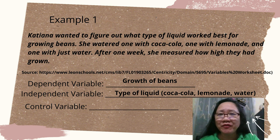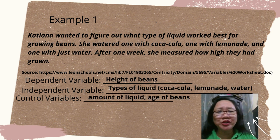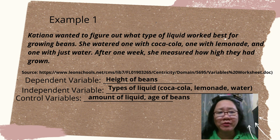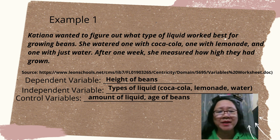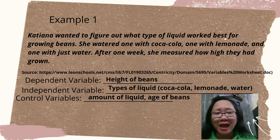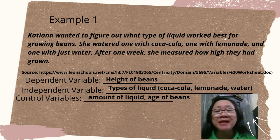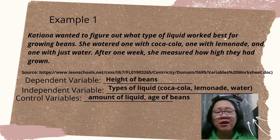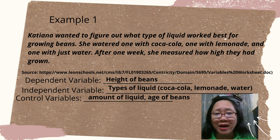Now, can you identify the control variable? Control variables are variables that are constant and do not change in the study. One of the control variables is amount of liquid. For instance, you water the beans with 50 ml of Coca-Cola, another group with 50 ml of lemonade, and another group with 50 ml of just water. So 50 ml is the same for all groups, making amount of liquid a control variable. Another control variable is age of beans — the beans used in your experiment should all be the same age, for instance, all one month old.